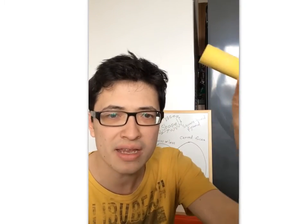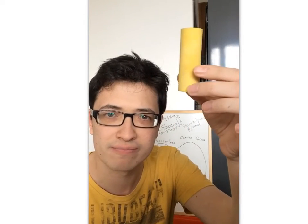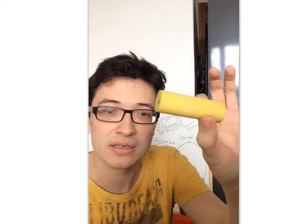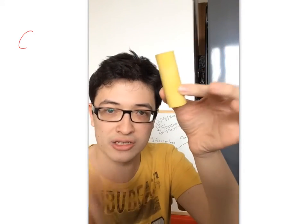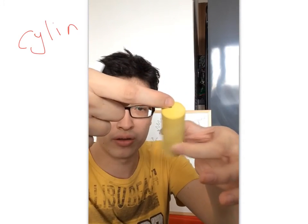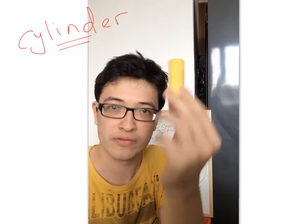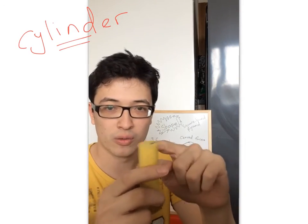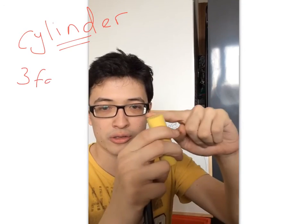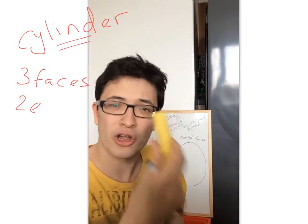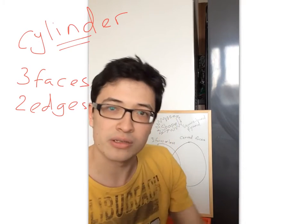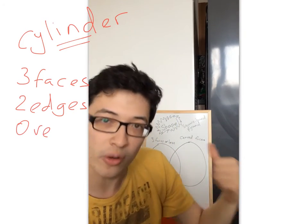Right. Let's have a go with a different shape. Any idea what shape do we call this? Well, this is a cylinder. And it's got 1, 2, 3 faces. It's got 1, 2 edges, but it's got no vertices. So let's see where it fits in our Venn diagram.